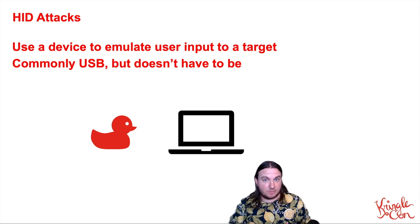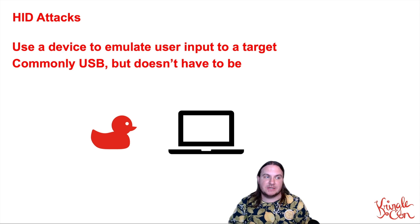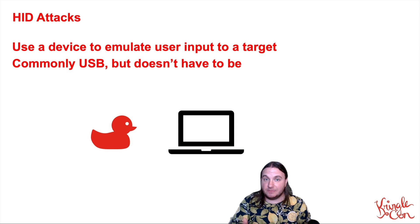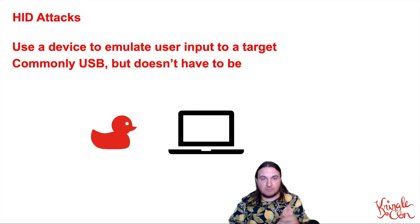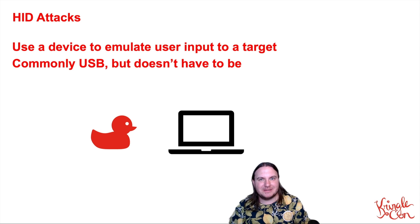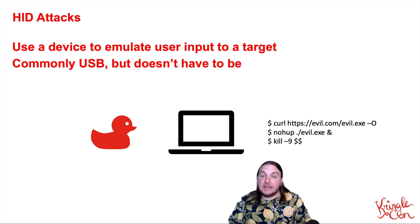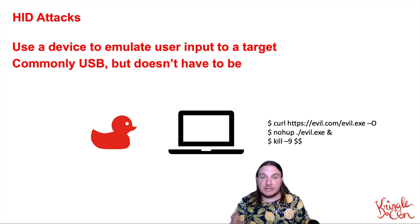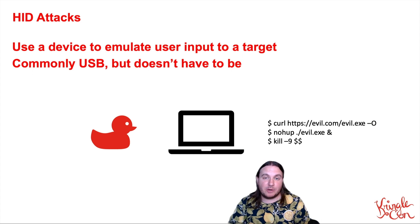Anything you could do with a keyboard — which is quite a lot on almost every operating system — you can emulate with a hidden attack device. It's commonly USB, but it actually doesn't have to be; there are wireless versions using tools like Jackit, if you've ever heard of that. Here we have our USB rubber ducky and an unlocked machine that someone's walked away from. You're able to just run some commands — maybe open a terminal and curl down an evil executable, run it, put it in the background, kill the shell so there's no history, and now you have malware running on your network.